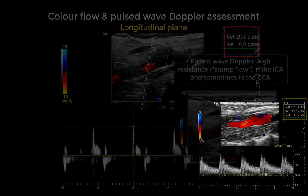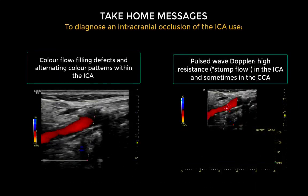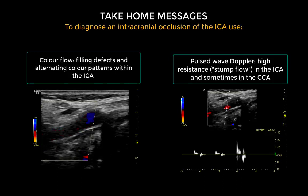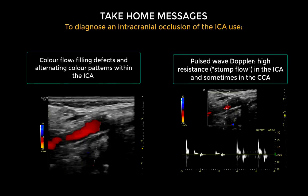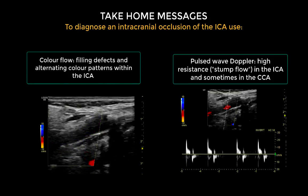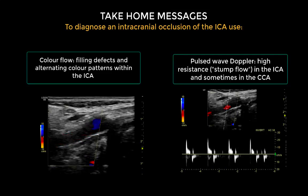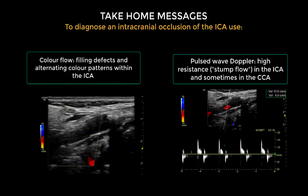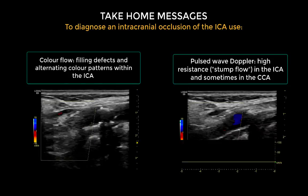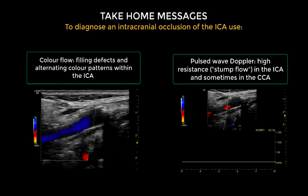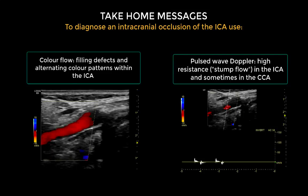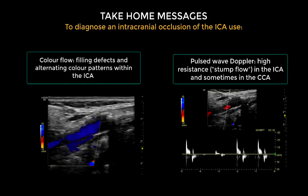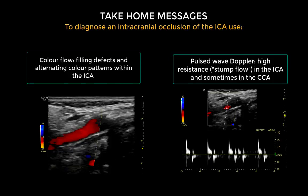The take-home messages from this case are: colour flow abnormalities such as an alternating colour pattern may indicate distal obstructive pathology at intracranial level, and a stump flow waveform within the internal carotid artery is also indicative of distal obstructive pathology. Remember that you can only make a suspicion of intracranial obstructive disease — the patient will need further imaging of the intracranial circulation to confirm or exclude the diagnosis.